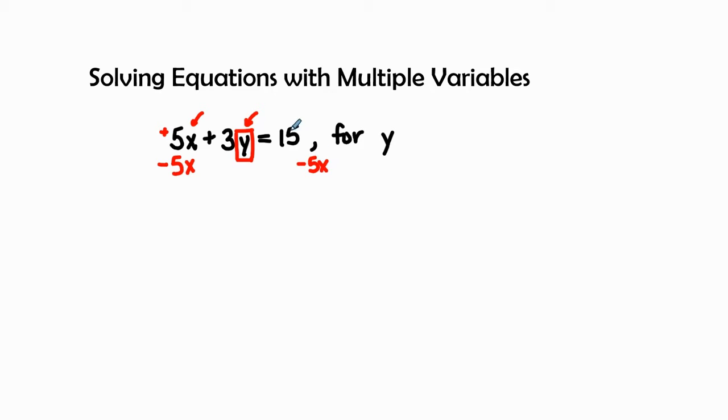Now, I'm not going to put the 5x underneath the 15 because the 15 is a constant, and this is a coefficient and variable. So I am going to treat it individually when I'm combining like terms.